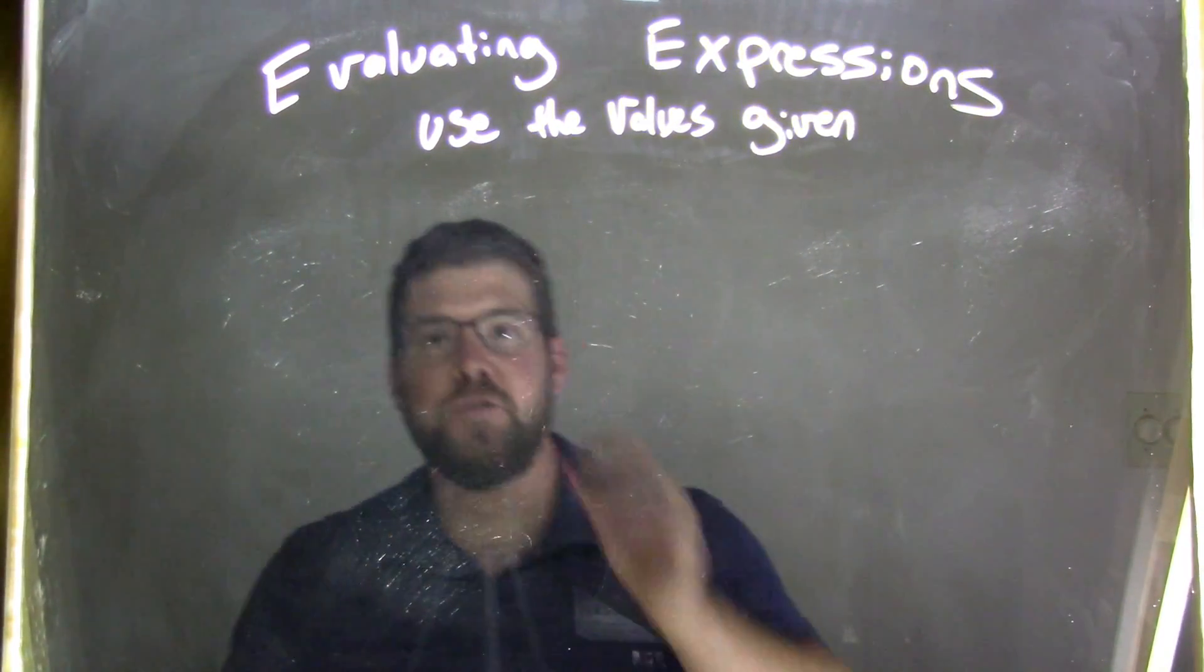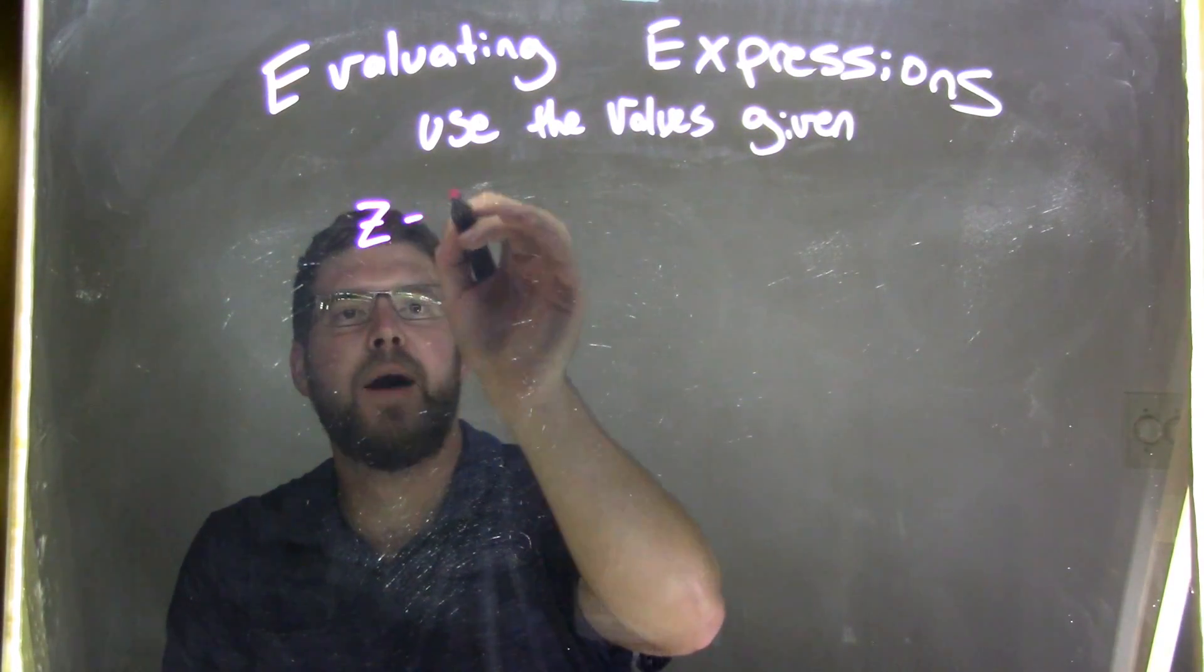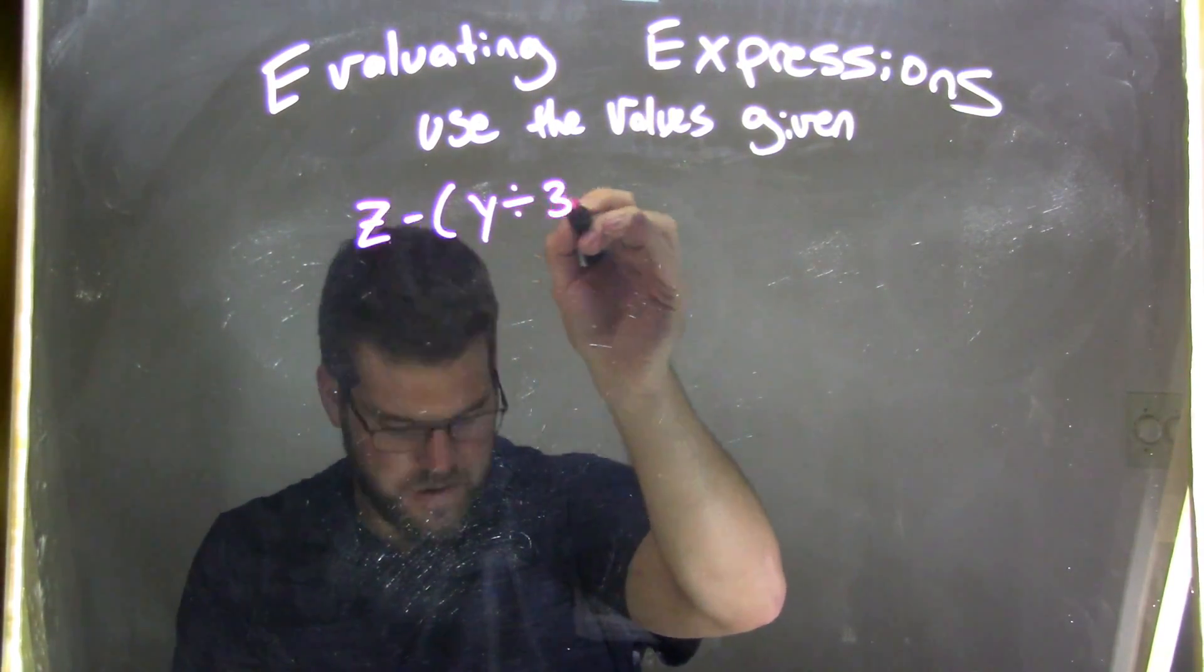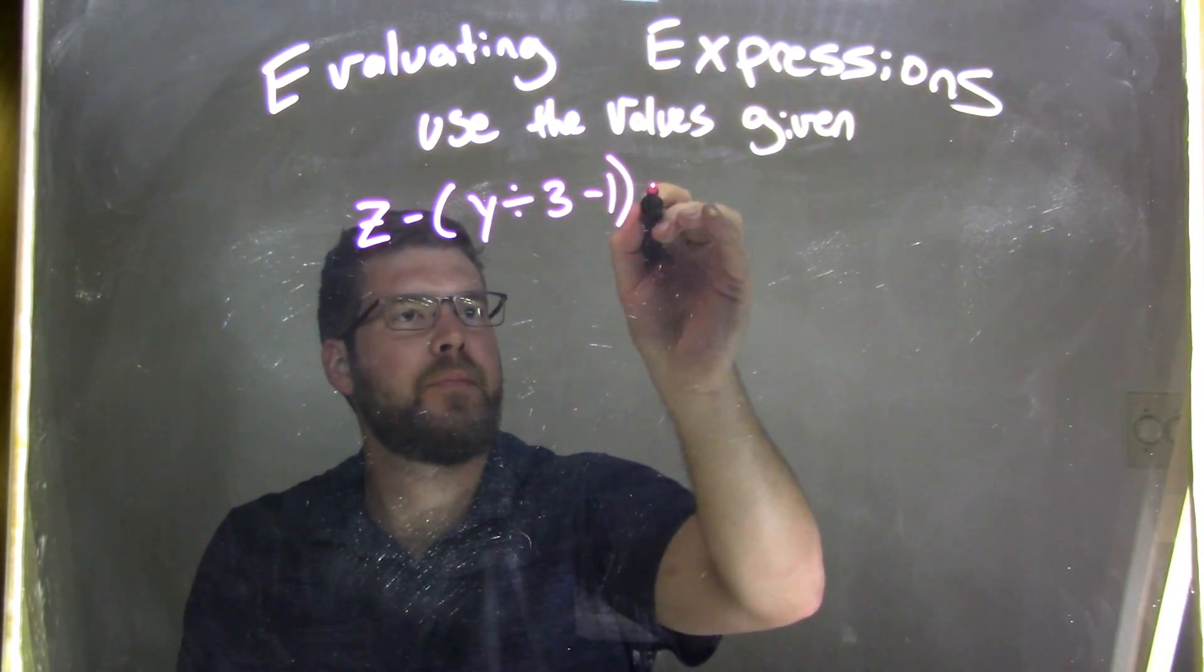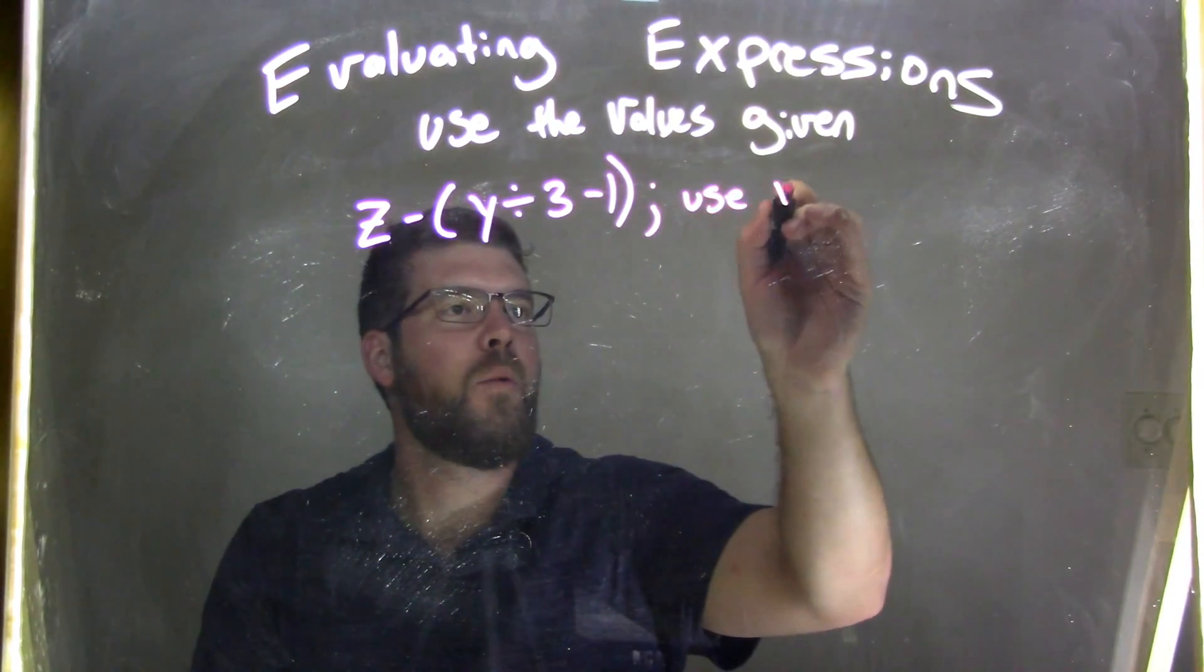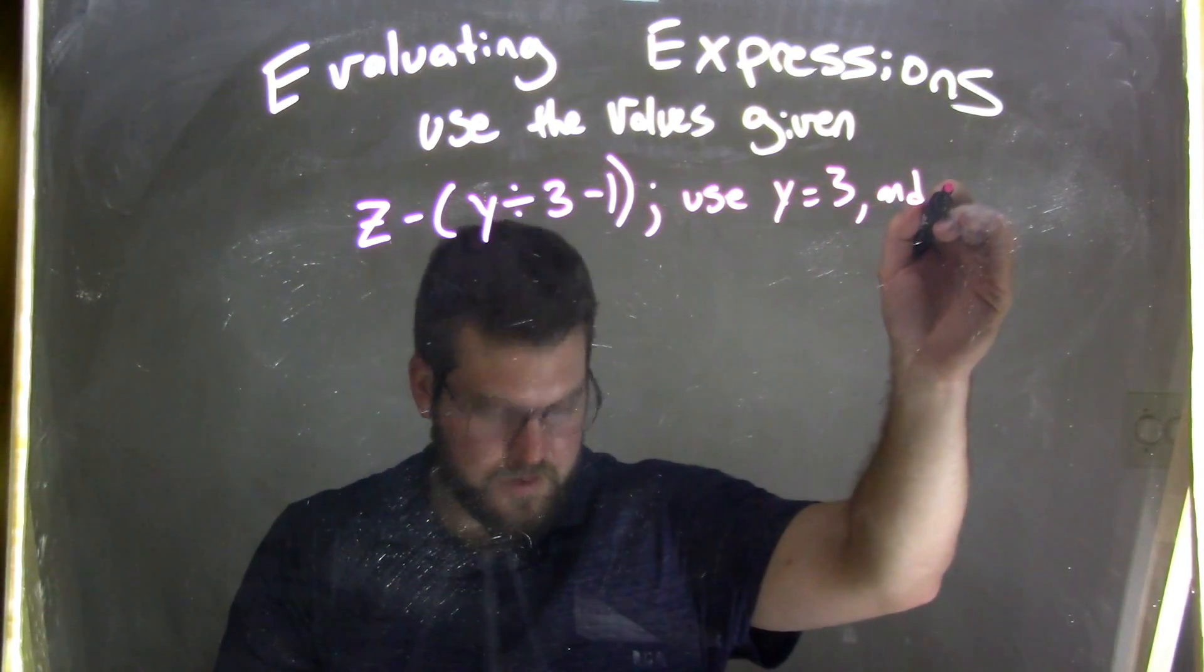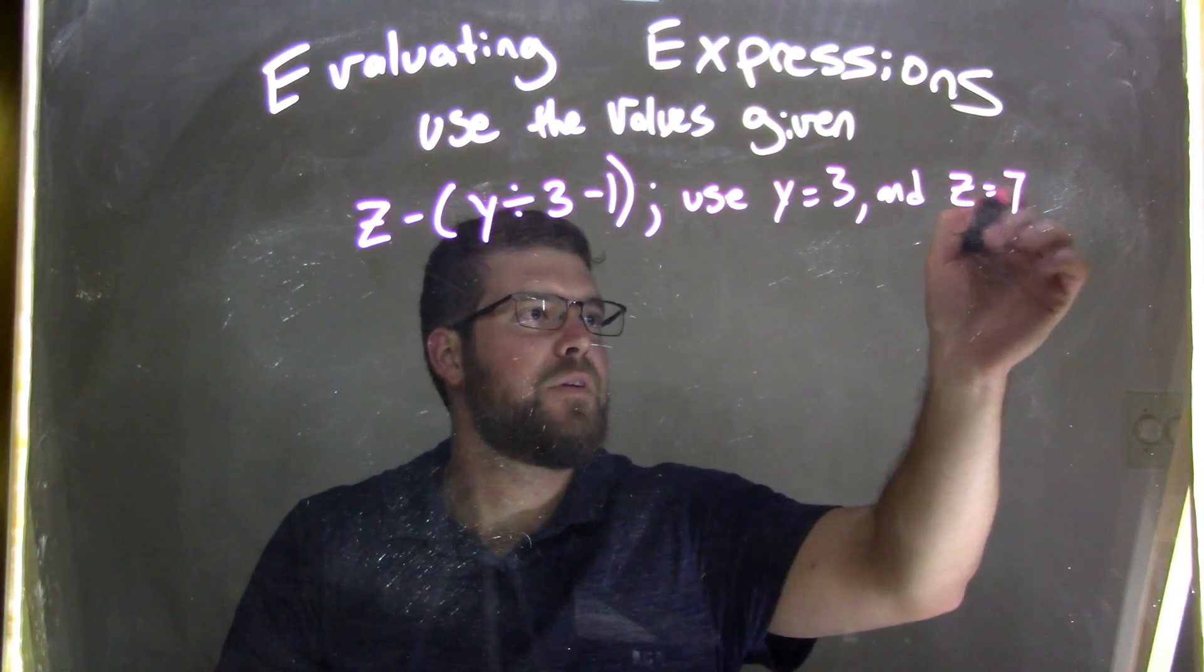So if I was given this expression: z minus parentheses y divided by 3 minus 1, and I want to use y equals 3 and z equals 7.